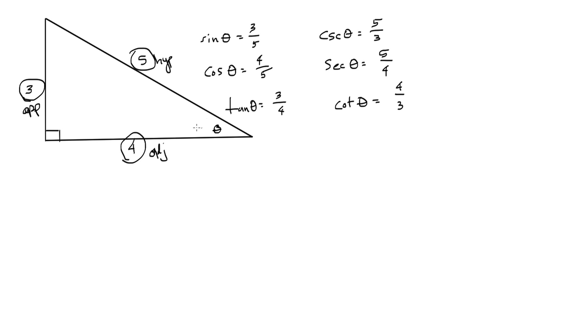And tangent, which is opposite over adjacent, 3 over 4, and cotangent, which is the reciprocal of that, adjacent over opposite.